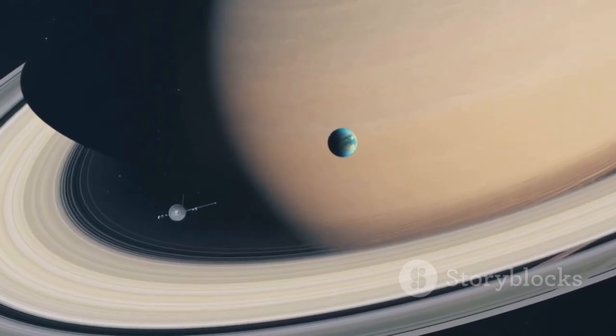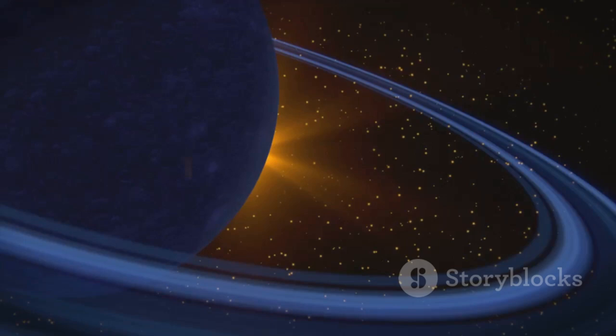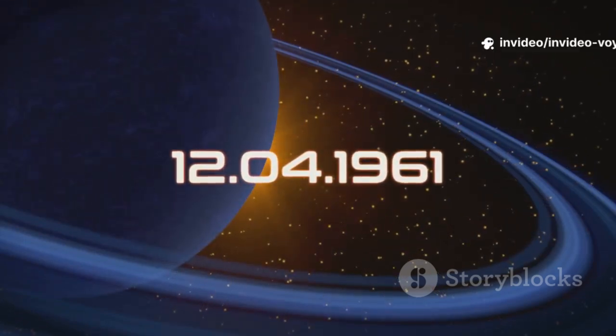Voyager 2 travels at over 34,000 miles per hour. At that incredible speed, it still took over a decade just to reach Neptune.